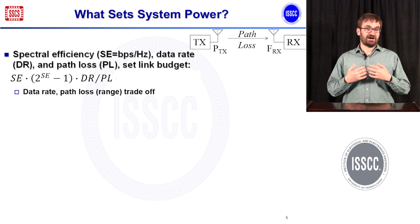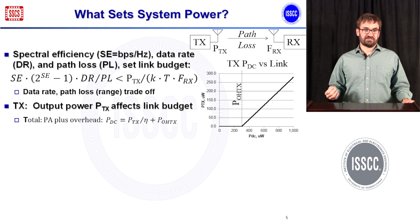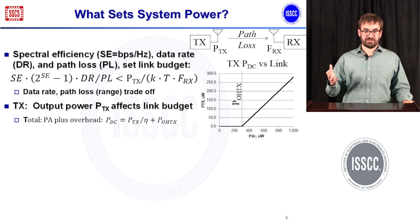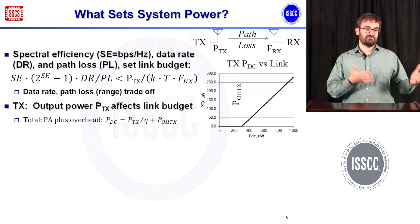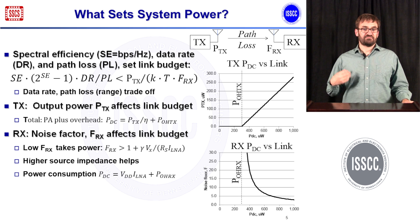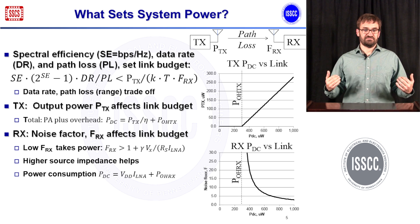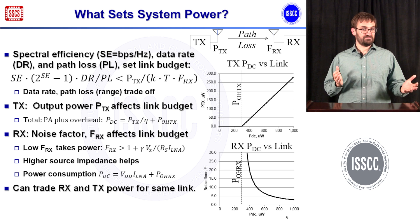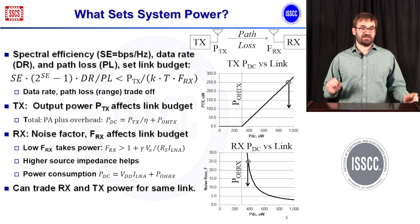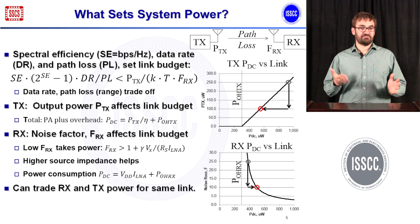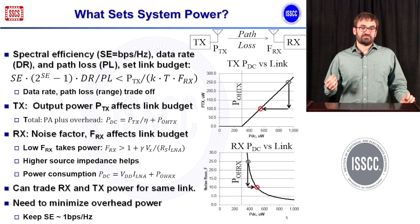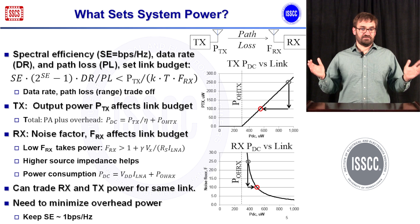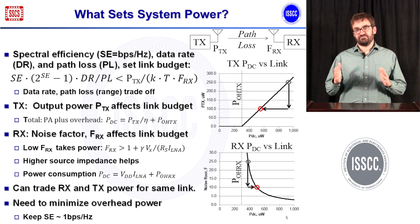These things trade off against each other — a higher data rate requires less path loss, meaning shorter range. They also trade off against circuit parameters: the power your transmitter generates and the efficiency of your PA, and in the receiver, the power in your LNA sets its noise factor and therefore sensitivity. You can trade transmit versus receive performance — for example, reducing transmit power while increasing receive power can yield the same link at lower overall power. We must also minimize overhead power, which implies simple modulation and relatively low bits per second per hertz.